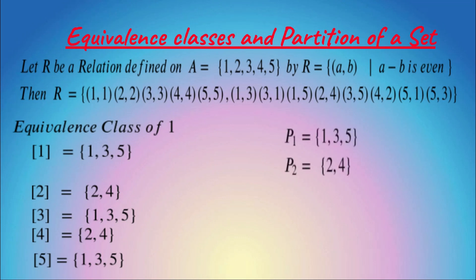So equivalence class of 1 and equivalence class of 5 are the same, and equivalence class of 2 and equivalence class of 4 are the same. From here we get 2 sets: P1 = {1, 3, 5} and P2 = {2, 4}. The set {1,3,5} equals equivalence class of 1, equivalence class of 3, and equivalence class of 5. P2 is equivalence class of 2 and equivalence class of 4.